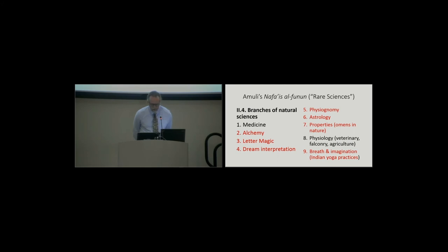So here's the way the natural sciences look. The ones that are highlighted in red are the occult sciences but look how they're sandwiched right next to alchemy and veterinary and agricultural science. In other words, these are all placed in the same category as the natural sciences and oddly it concludes with a section which is called the science of breath and imagination which turns out to be Indian yoga practices.